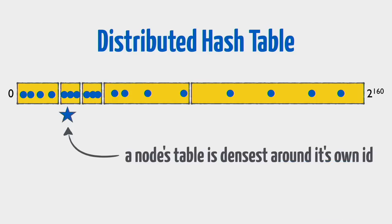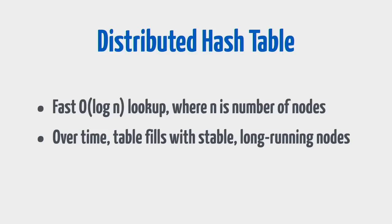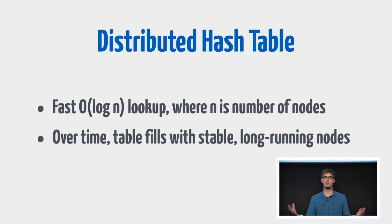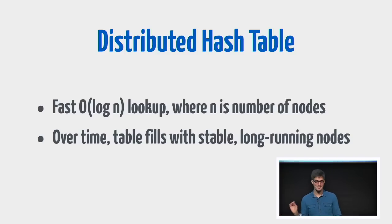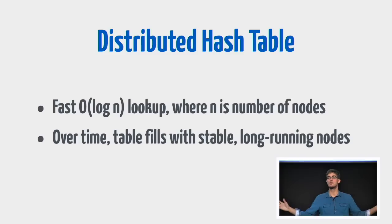This all works and it's efficient because nodes are dense around their own ID's location. As I recurse over this algorithm, I'm honing in very quickly on exactly the people I'm trying to talk to. It has really good O(log n) performance. Over time your table fills up with stable, long-running nodes. One thing we didn't talk about: how do you get your first peer? If all you have is the hash of a torrent, how do you find the first one to talk to? For that we need to use a bootstrap server — again, a point of centralization, but we've minimized it so much that as long as you know someone's IP and port, you're bootstrapped into the network and can discover everything from there on out.